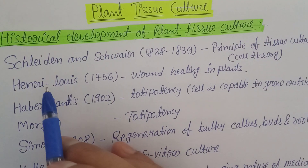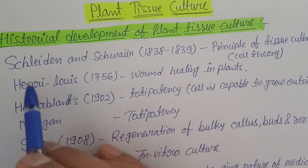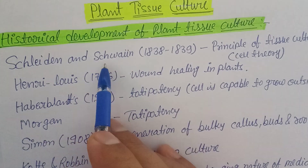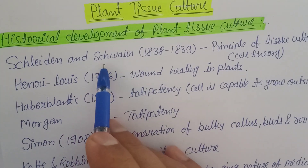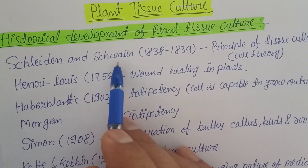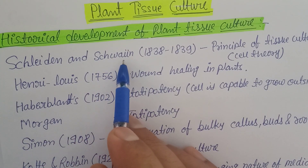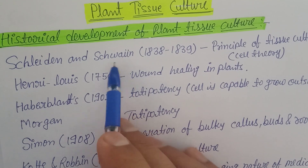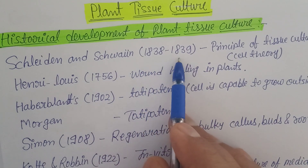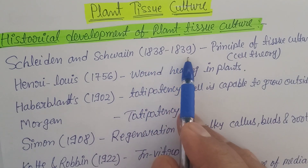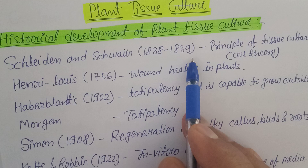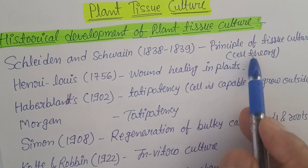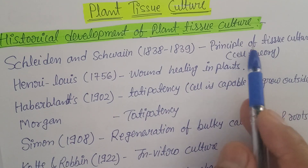First of all, Schleiden and Schwann — S-H-W-A-N-N — in 1838 and 1839 told about the principle of tissue culture, which is the cell theory. This was the first principle given in the history of plant tissue culture.